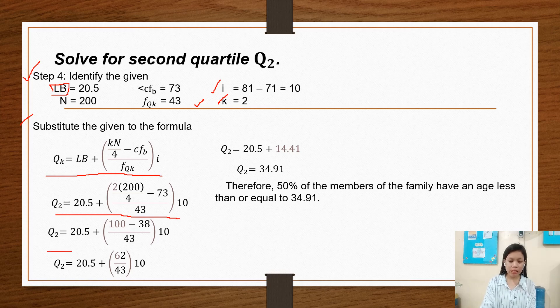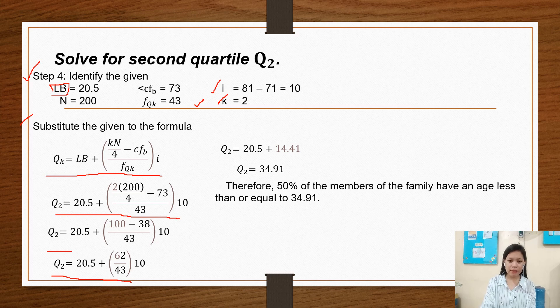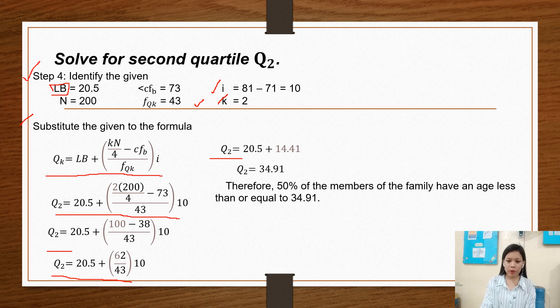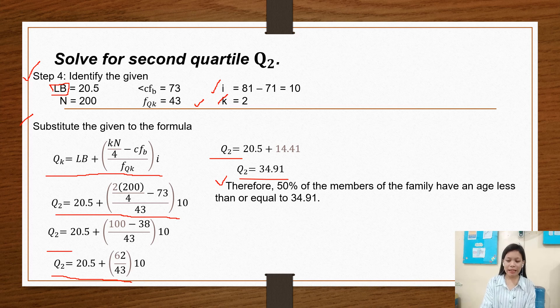So we have here Q sub 2 equals 20.5 plus, calculating 2 times 200 over 4 minus 73, that's 100 minus 73 equals 62, over 43 times 10. So Q sub 2 equals 20.5 plus 14.41. So our value for Q sub 2 is 34.91. Therefore, 50% of the members of the family have an age less than or equal to 34.91.